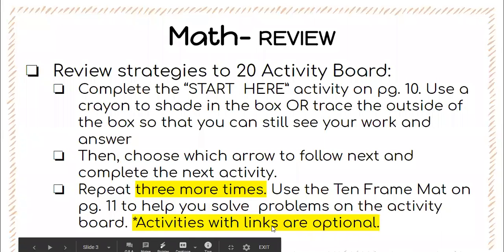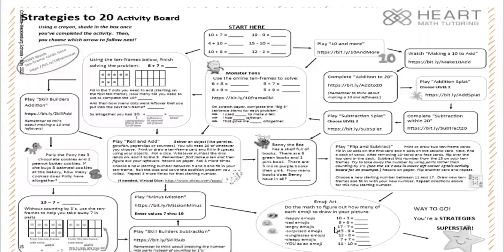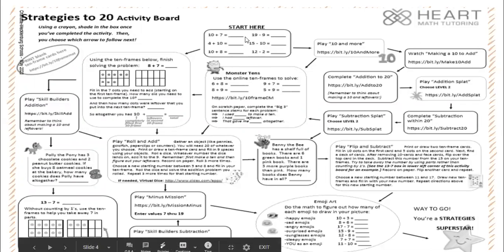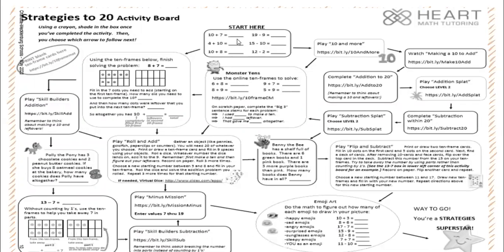There are activities with links and those are optional. I did want to show you how you can do this activity board. Right here it says start here, so this is going to be the first box that you do. These are addition and subtraction equations that you're going to solve. Again on page 11 you can use a 10 frame to help you solve these equations. Once you have finished solving these equations, you can color in the box, or it might be a better idea to take your crayon and trace around the outside of the box so you can still see your work.